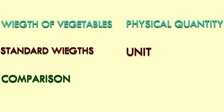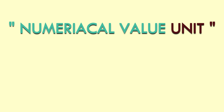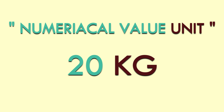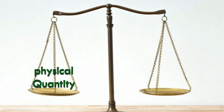So in this example, the weight of the vegetable is a physical quantity, the standard weight is a unit, and the process of comparison is measurement. The result of measurement is always expressed by a numerical value followed by a unit. For example, the weight of a vegetable is expressed as 20 kg — here 20 is the numerical value and kg is the standard reference or unit.